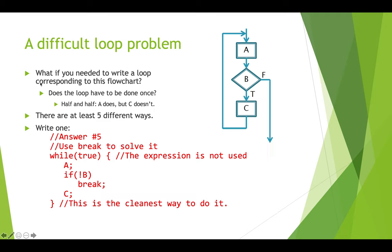Now if we look back at our difficult loop problem, now we have another way to deal with this. We can use break. And so in this case, what we're going to do is while true, and then we do the statements A, and then if B is false or if not B, then we break out of the loop. And if otherwise, we continue through here and we complete the statements that are C. And so this is actually the cleanest way to do this because we're able to jump out of here.